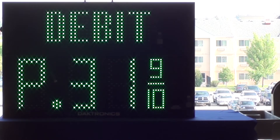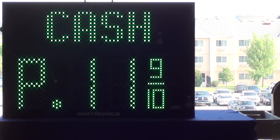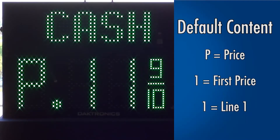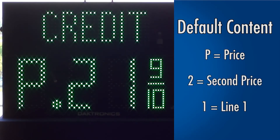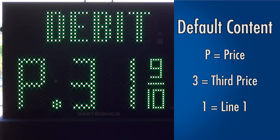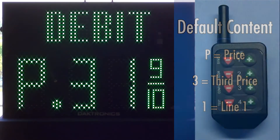The hold time for the cash, credit, and debit states is also configurable. This is a global setting and applies to all of the states selected to display. The default hold time from the factory is 5 seconds, but can be configured from 1 second to 9.9 seconds.